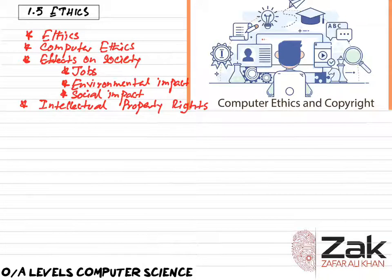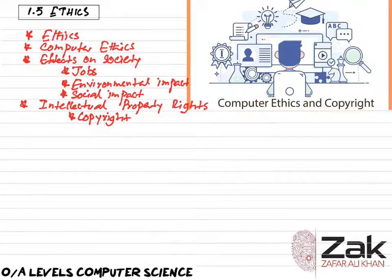Regarding intellectual property rights, copyright is a form of intellectual property that gives proprietary publication, distribution, and usage rights to the author. This means that whatever idea the author created cannot be employed by anyone else without the permission of the author. Whatever is being produced, written, made, or shown is covered by copyright; just the idea itself does not have any copyright.